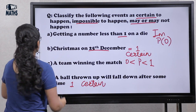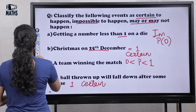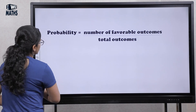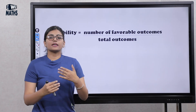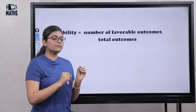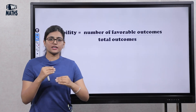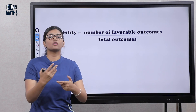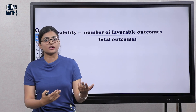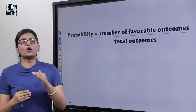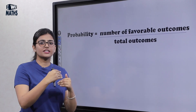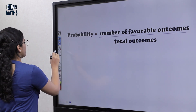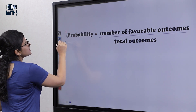Now let's go ahead with probability. In some cases, we will not always be told whether the event is possible or impossible. So when we need to find the probability of any event other than these clear cases, we apply a formula.